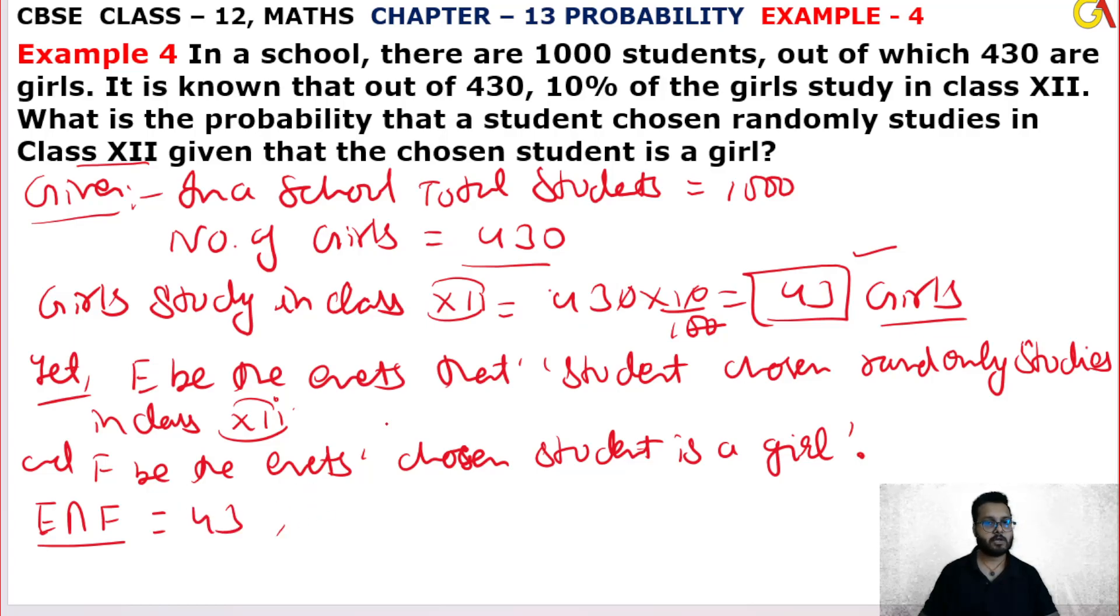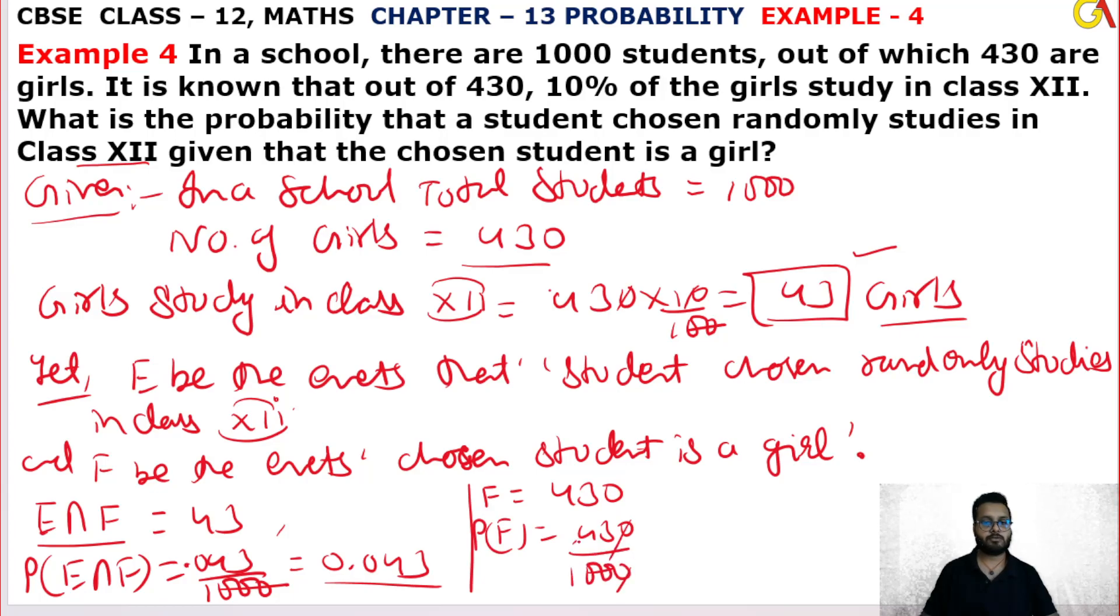If you have this probability, E intersection F equals 43 upon 1000, which is 0.043. F, the probability that the chosen student is a girl, is 430 upon 1000, which equals 0.43.